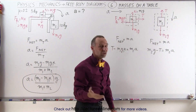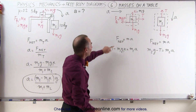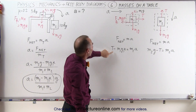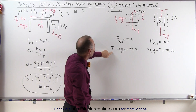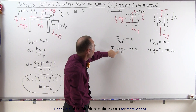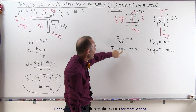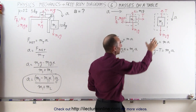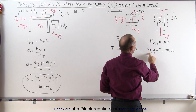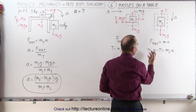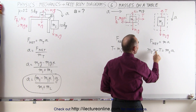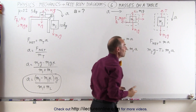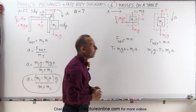The equations for Newton's second law, F net equals ma, for the first mass becomes: the tension, which is aiding, minus the friction force, which is opposing, equals the mass times acceleration. And in the hanging weight case, it's the gravitational force pulling down, which is aiding the acceleration, minus the tension in the string, which is opposing, equals m2a.